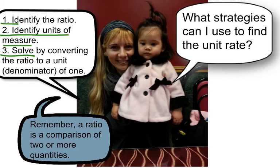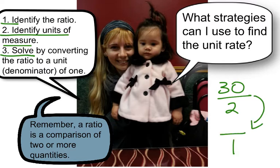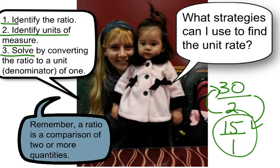So if I have 30 miles in two gallons, I need to convert that to a unit over one. You divide 30 by 2 and you get 15. So that's the unit rate — in this case, 15 miles per gallon, or 15 miles in one gallon.